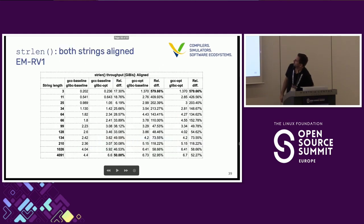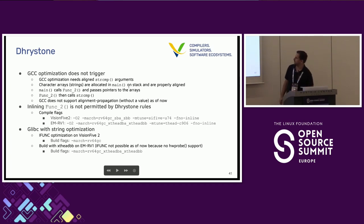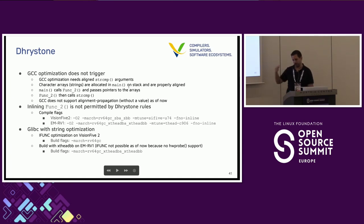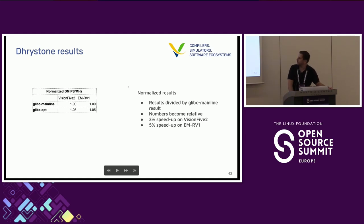Moving to Dhrystone: this is a quite old benchmark which also includes string comparison. GCC optimizations do not work here, simply because GCC's current optimization does not feature alignment propagation — we cannot emit a string compare sequence by GCC because we don't have the alignment information at the call site. The GLIBC optimization still applies. The result, normalized to compare speedup rather than absolute performance: one machine shows 3% speedup, the other shows 5% speedup.